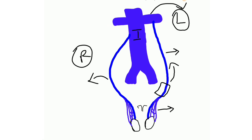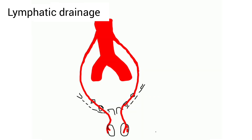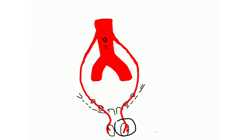The testicular vein on the left side drains into the left renal vein, whereas on the right side it drains directly into the inferior vena cava. For lymphatic drainage of the testes, it drains to the pre-aortic and para-aortic lymph nodes. Thank you.